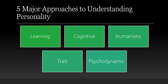We also have the cognitive approach — how has your thinking affected who you are and your behavior and preferences? Then there's the humanistic approach, which emphasizes the self and concepts like self-actualization, a desire to reach our fullest potential, and experiencing unconditional positive regard from others. The trait approach simply looks at our traits and makes predictions based on them. And the psychodynamic approach — you probably think of Freud — emphasizes the role of early childhood experiences and unconscious impulses that affect who we are today.